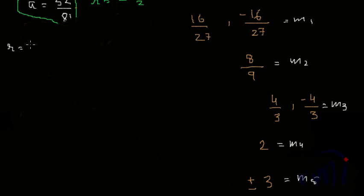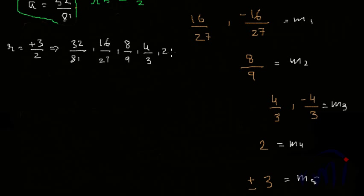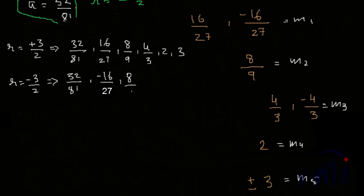When r = +3/2, the sequence is: 32/81, 16/27, 8/9, 4/3, 2, 3. When r = −3/2, every alternate term is negative: 32/81, −16/27, 8/9, −4/3, 2, −3, and then the last term 9/2.